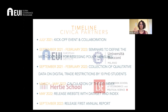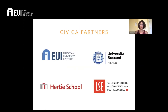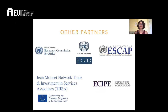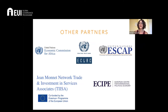In September, we aim to release the first annual report with the data and information we have created and calculated. This is the first annual report because the idea is for this project to be long-term — every year there should be a release of a new report showing what has changed throughout the year. The four CIVICA partners are the EUI, Bocconi University, LSE, and ERTE. We also have three UN agency secretariats: UNESCAP, UN ECLAC, and UNECA. We also have the TISA network and eCipe with Eric van der Marel.